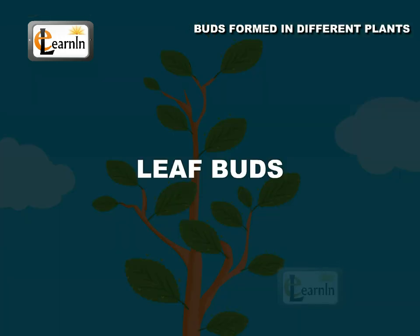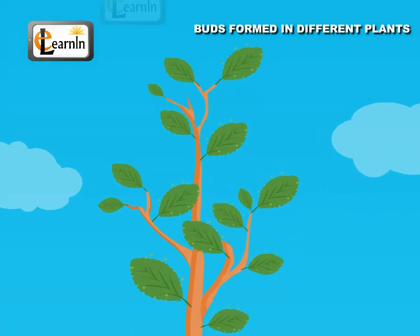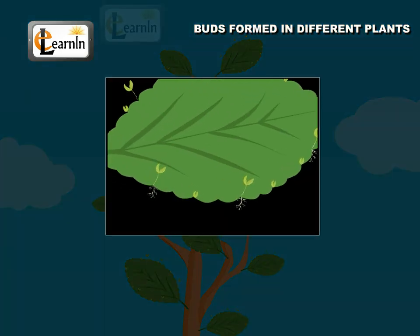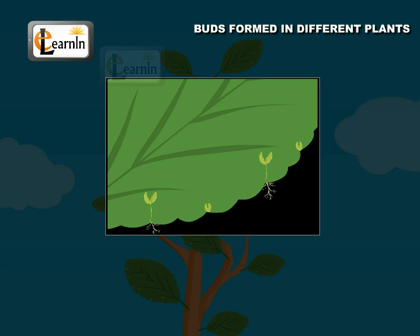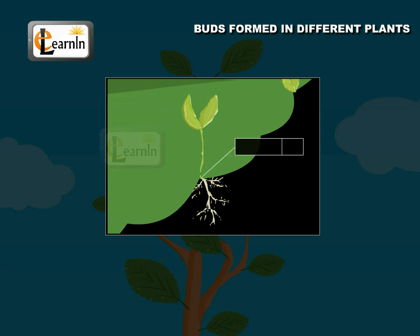Leaf buds: In Bryophyllum, buds are situated in the depression of leaf margins. The usual position of buds is either at the terminal part of the shoot or in the axil of a leaf. These buds in Bryophyllum are known as epiphyllous buds.